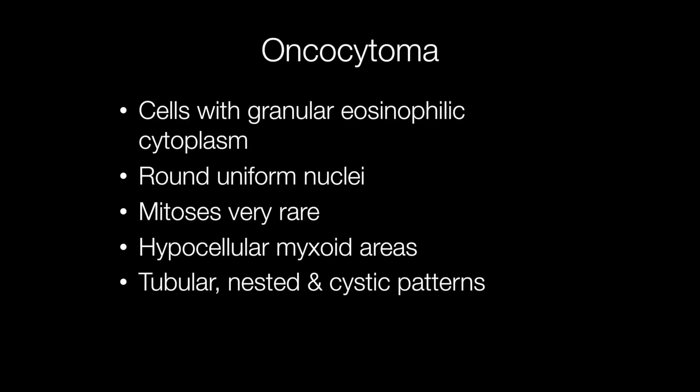The typical histology of an oncocytoma is cells with granular eosinophilic cytoplasm containing round uniform nuclei with very rare mitoses, if any. There are often hypocellular or myxoid areas, and the pattern of the cells may be tubular, nested, and cystic.